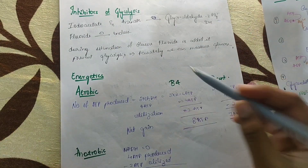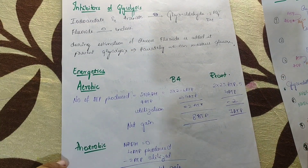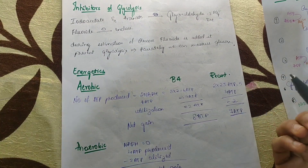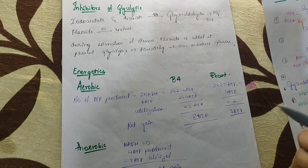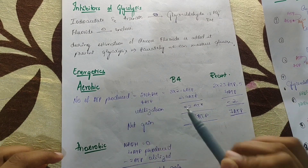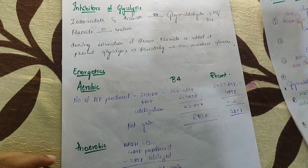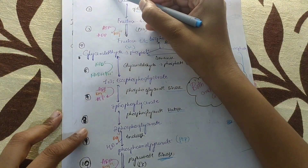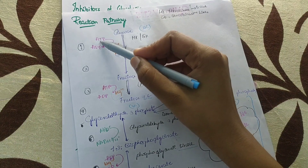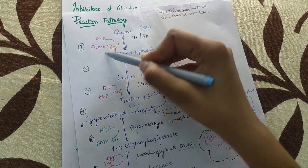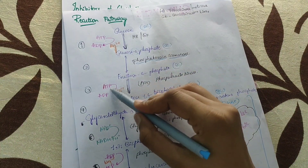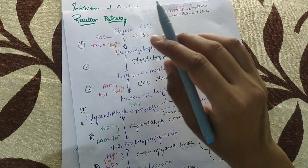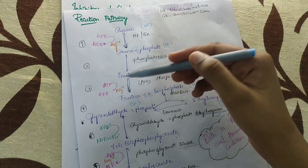Now energetics — in aerobic and anaerobic conditions, energy production will be different. Aerobic produces more energy than anaerobic. In aerobic conditions, as we discussed, during glycolysis 2 ATPs are utilized — ATP becomes ADP at two points. This is the same for both aerobic and anaerobic conditions.